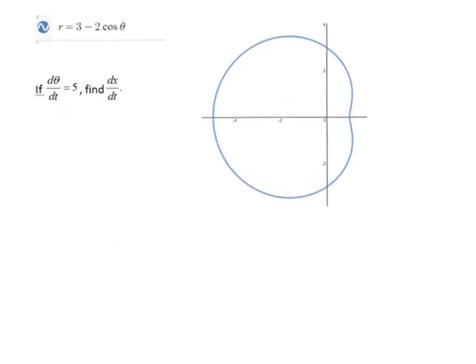Finally, what if they made it a related rate? This has happened before where suddenly they say the angle is changing with the rate of something. How is x changing? Well, what you've got to remember, of course, is that in our case, in this problem, x is equal to r cosine theta.